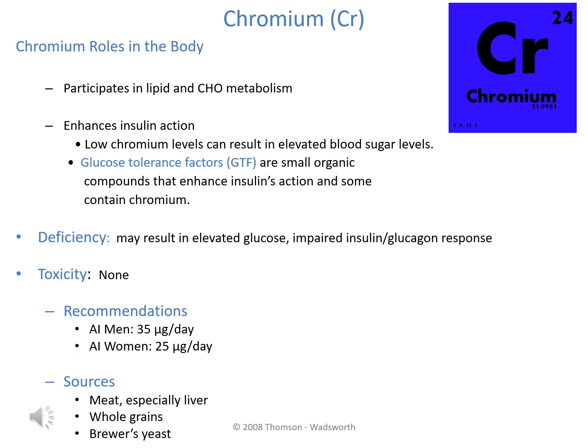Chromium is an essential trace mineral that participates primarily in lipid and carbohydrate metabolism and enhances the activity of insulin within the body. There is a compound known as GTF, glucose tolerance factor, which assists with the way the body uses insulin, and chromium has been identified as being part of this necessary compound. Deficiency is not common, but if it occurs it can cause an elevation in blood glucose levels. Toxicity has not been identified in humans. There is no RDA, but an adequate intake has been established. Best sources include meat — especially liver — whole grains, and brewer's yeast.